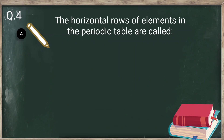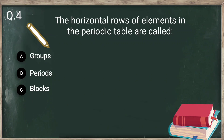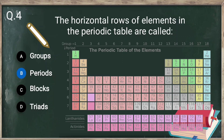Question number 4: the horizontal rows of elements in the periodic table are called — groups, periods, blocks, or triads? The answer is periods. In the periodic table, elements are arranged in two ways: the horizontal rows are known as periods, while vertical rows are known as groups.